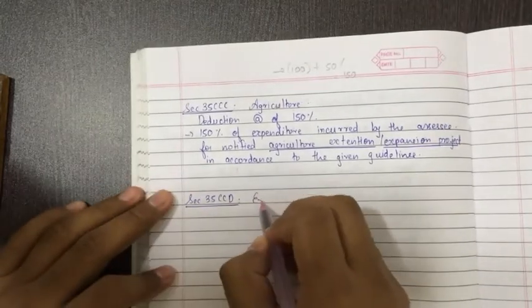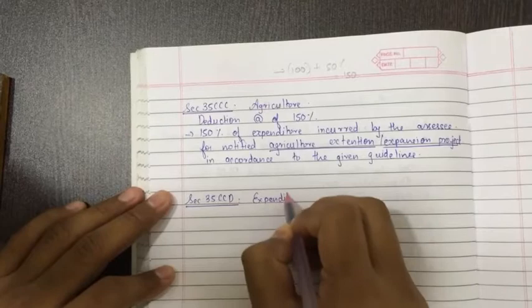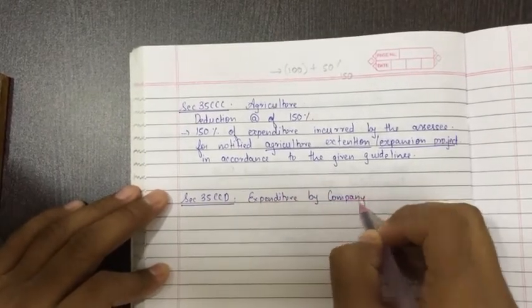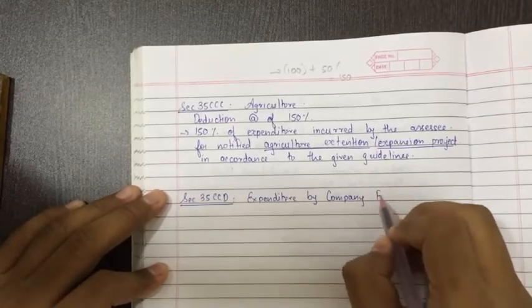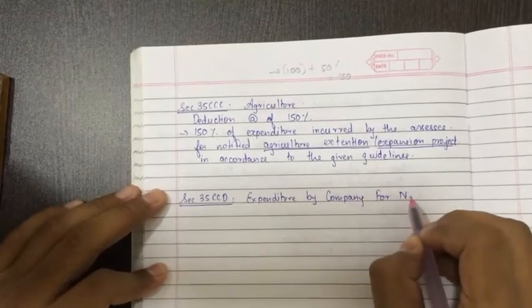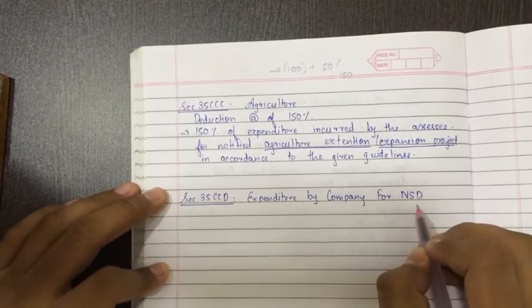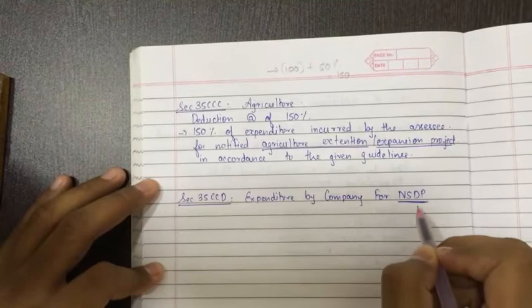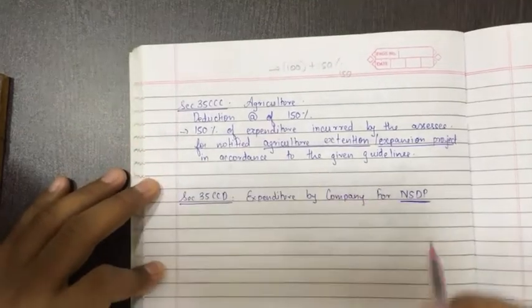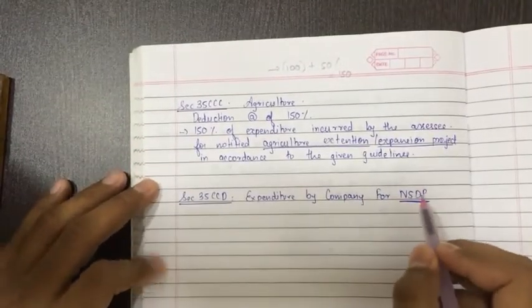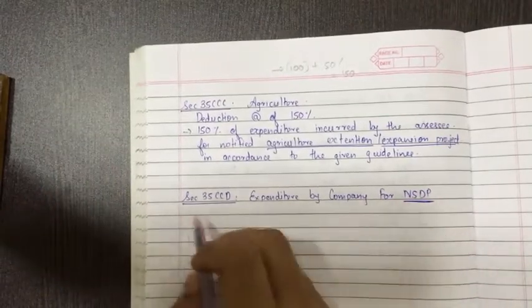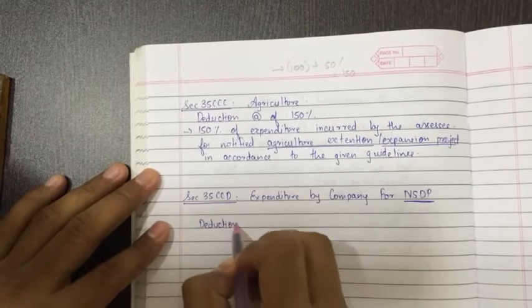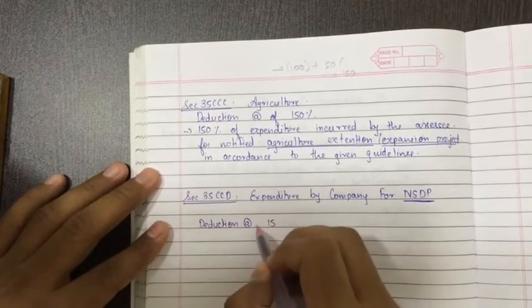Section 35CCD - expenditure by company for NSDP. What is NSDP? Notified skill development project, NSDP. It is also there in our service tax. When I will be teaching you service tax, that time I will go into detail about NSDP. Now just remember this much. Deduction - first see how much deduction will be allowed. Deduction at the rate of 150, at the rate of 150 percent.